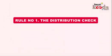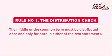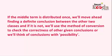The first rule is the distribution check. Under this rule, the foremost thing one needs to check is that the middle or common term must be distributed once and only once in either of the two statements. While using the deduction method, you will first need to check whether the distribution of the middle term or common term is happening or not. If it's happening once, we'll go ahead; if it doesn't happen, we'll use the method of conversion to find the conclusions or think of possibilities.